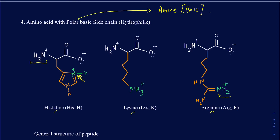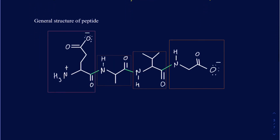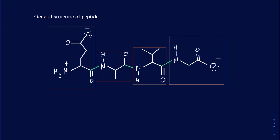How do you write down the general structure of peptides? In every peptide structure, you can count how many amino acids you have. In this particular case, there are four amino acids, so you call this a tetrapeptide. If you have two amino acids, you call it a dipeptide. If you have three, you call it a tripeptide. For five amino acids, you call it a pentapeptide and so on. But once you get over so many amino acids, you just call it a polypeptide.